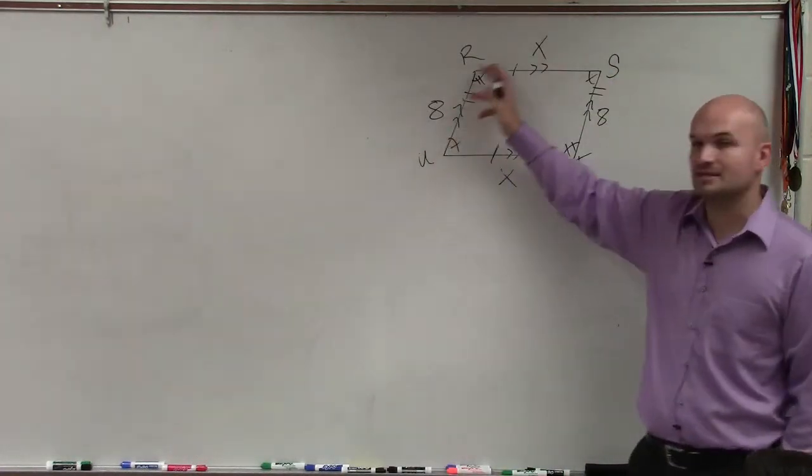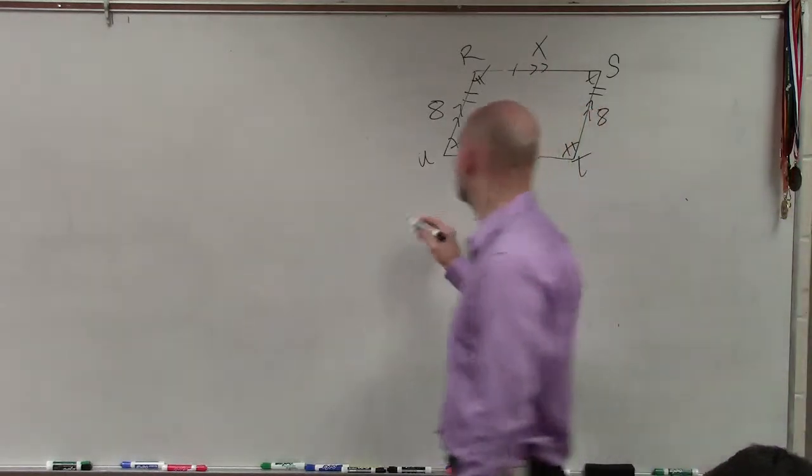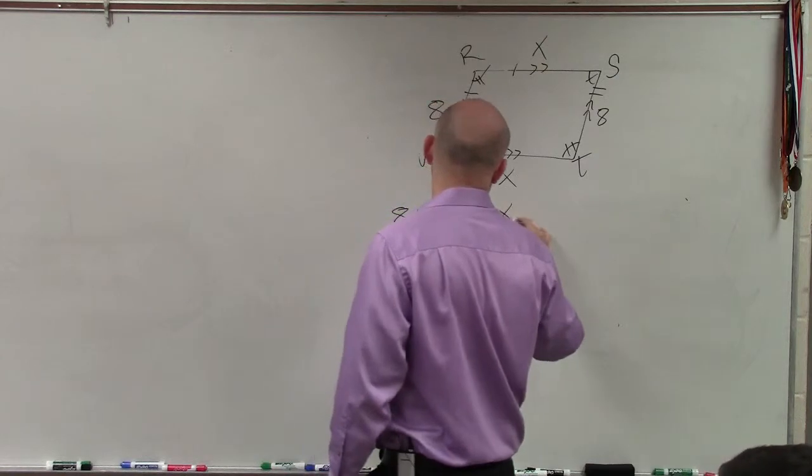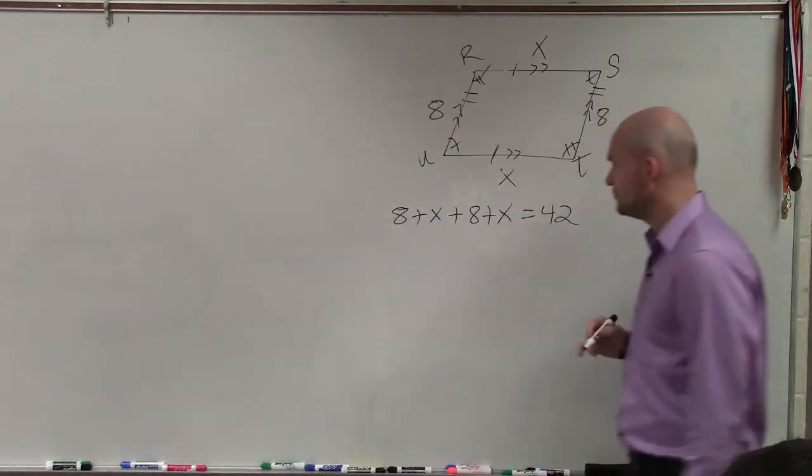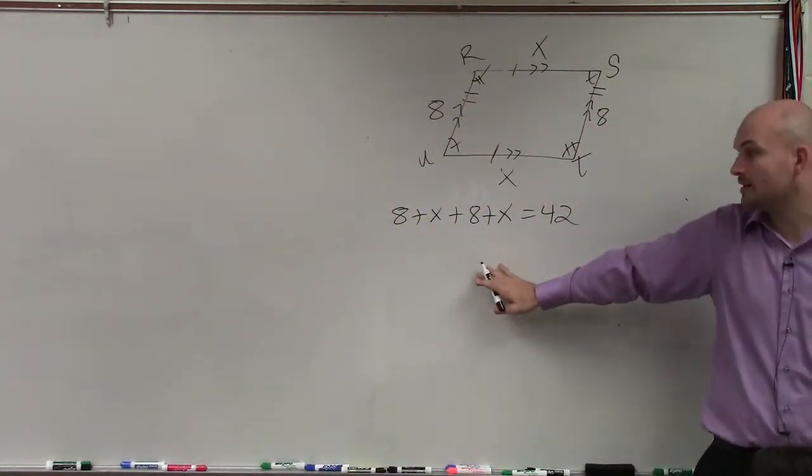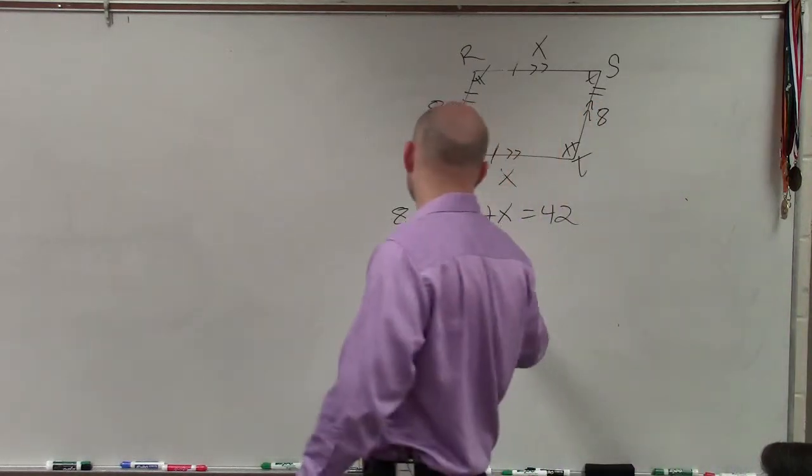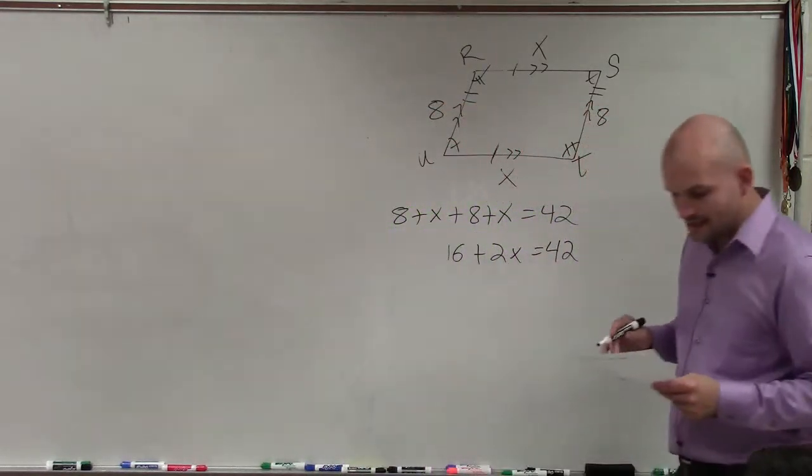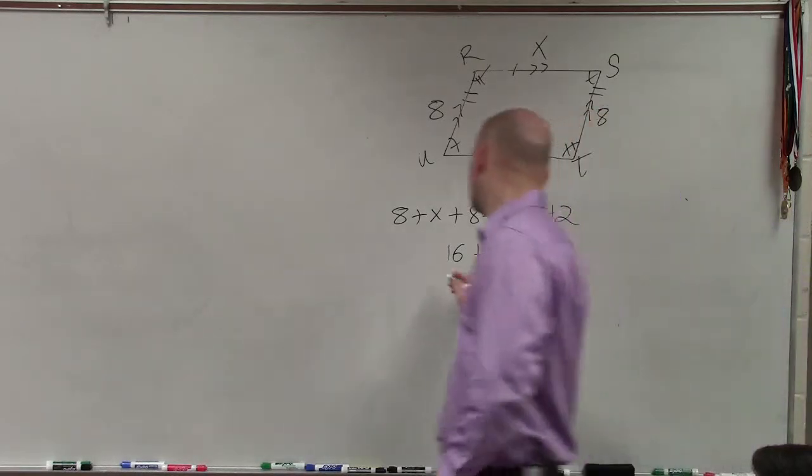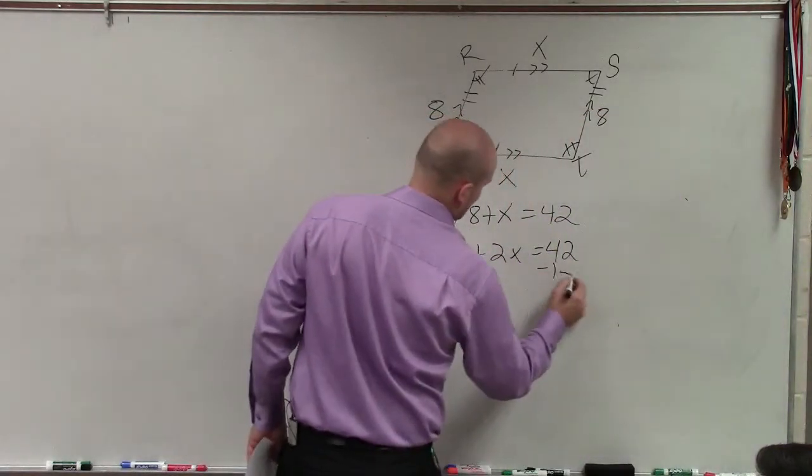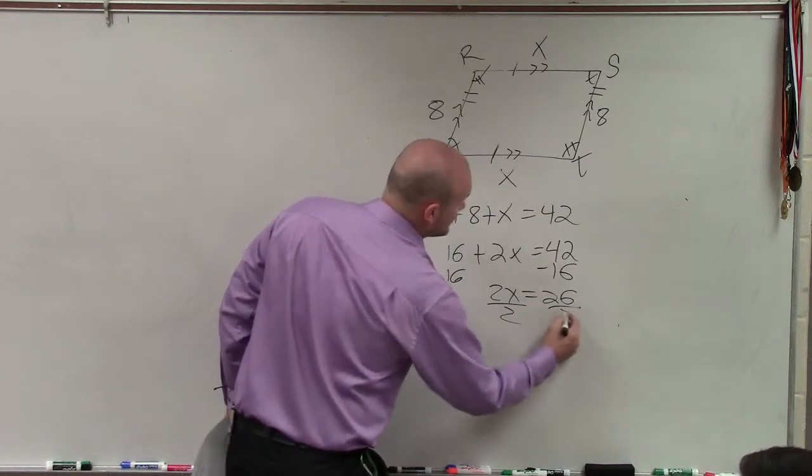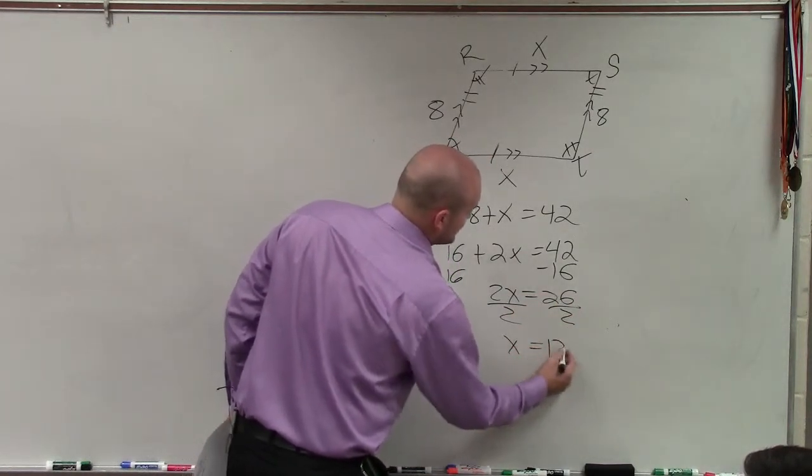So remember, perimeter is the distance around a figure. So I can simply write the equation 8 plus x plus 8 plus x equals 42. Now I combine my terms. 8 plus 8 is 16 plus 2x equals 42. And now we're just simply going to solve. 2x equals 26 divided by 2 divided by 2.